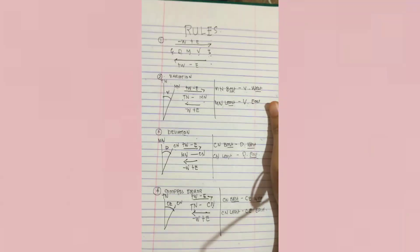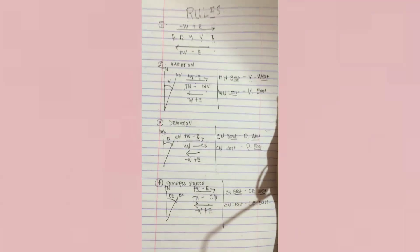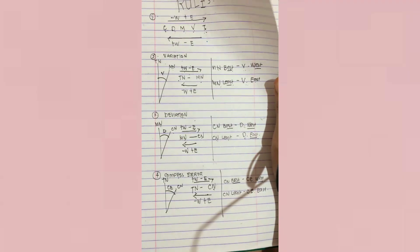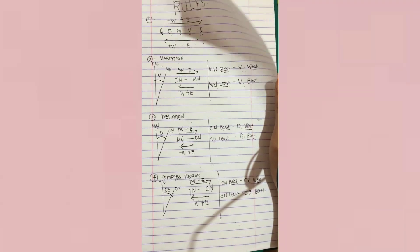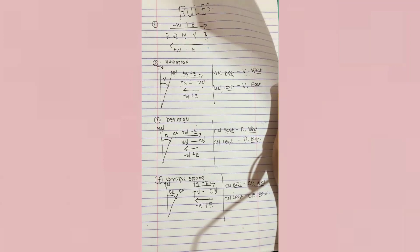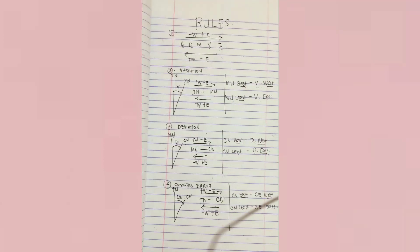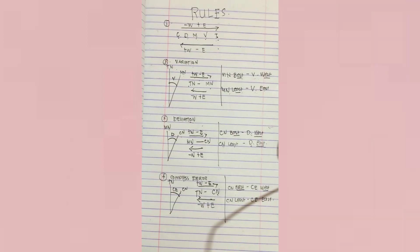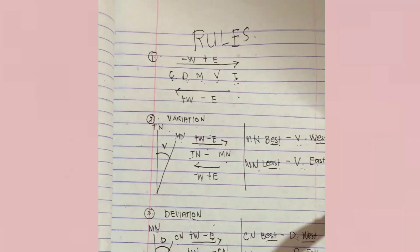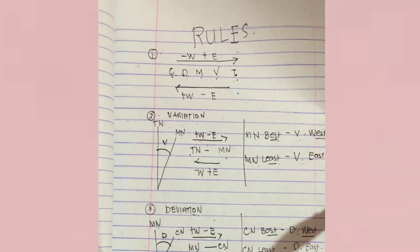So these are the rules that we should remember when calculating the compass north, the deviation, the magnetic north, the variation, and the true north. Now let me give you an example. Make sure you have already taken note of those rules before calculating the CDMVT.